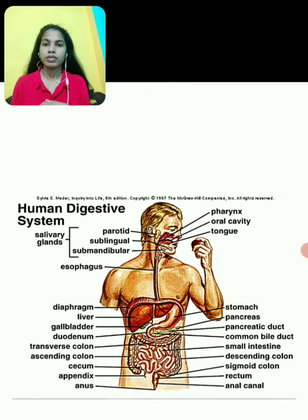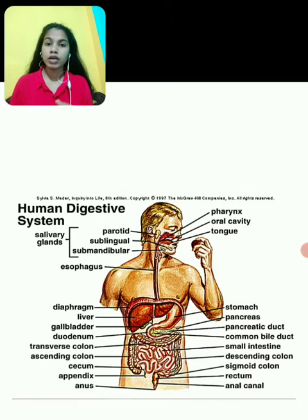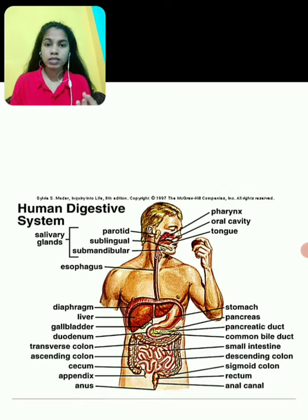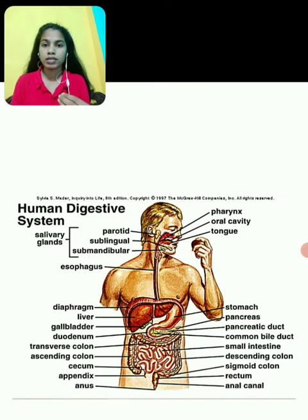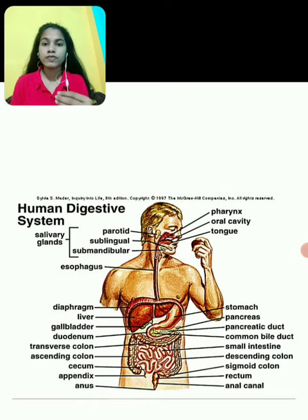The human digestive system plays a very vital role in digestion. The human digestive system starts from the mouth to the end, and it basically includes the alimentary canal and digestive glands. It is a system which includes all the activities related to food.